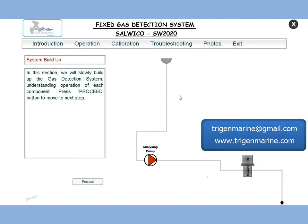So what does a system require? We require a sample point from where a sample would be taken, an analyzing pump which will suck the sample inside, and a gas detector. The sample will be passed and the hydrocarbon present will be sensed. We have started with the most basic system: a sample point, an analyzing pump, and a gas detector.